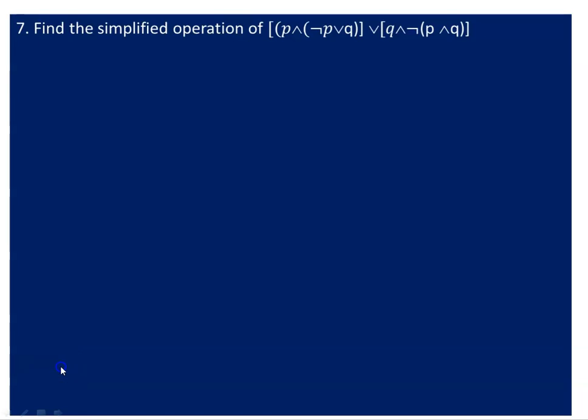The next question is to find the simplified form of a compound proposition. In this simplification process, we use connectives such as conjunction, disjunction, and implication as the proper tools for simplification.